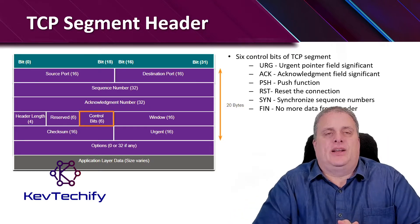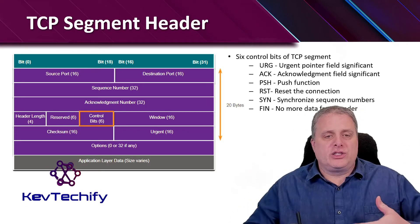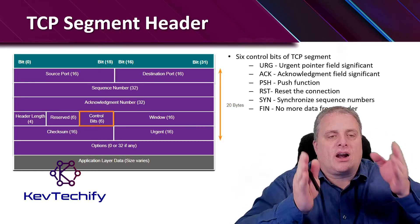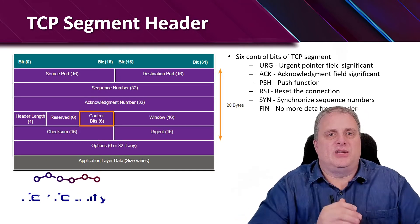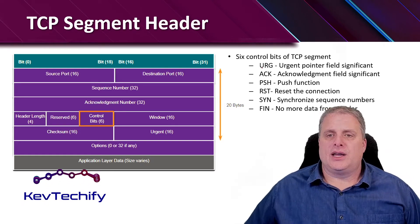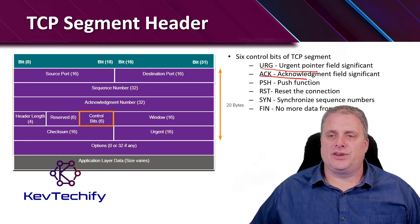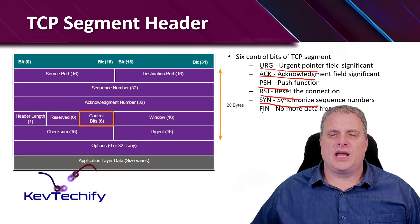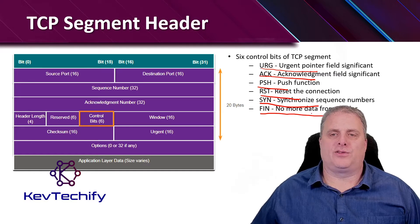Here is our TCP header. In our TCP header, we have our source and destination, sequence number, acknowledgments, header length reserved, and then we have six bits that are our control bits. Each one of these bits represents a function for the TCP segment. The first bit is the urgent pointer field. The second bit is the acknowledgement field. The third one is the push function. The fourth one is reset the connection. The fifth one is to synchronize sequence numbers. And the sixth and final one is the finished — no more data from sender field.